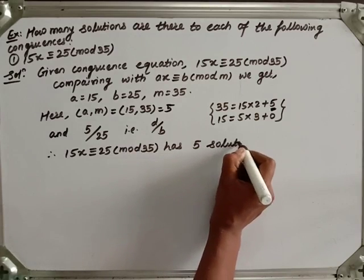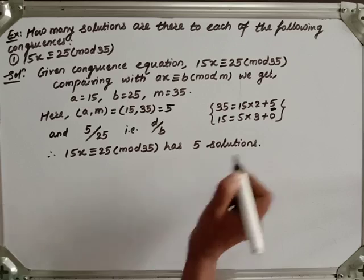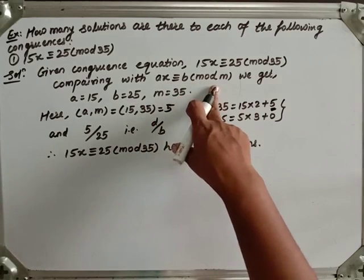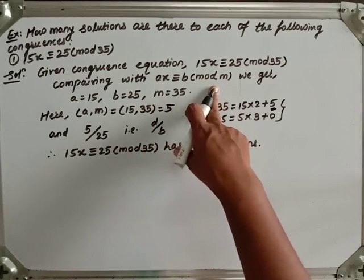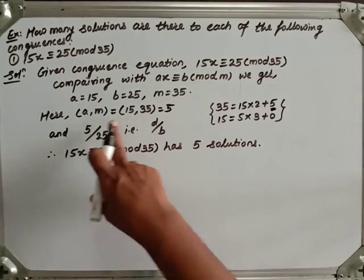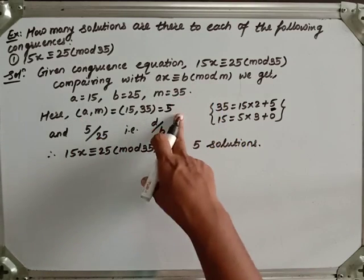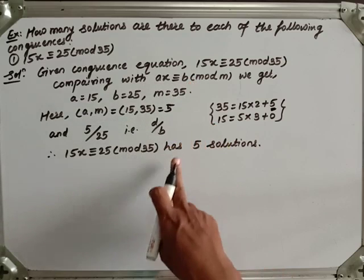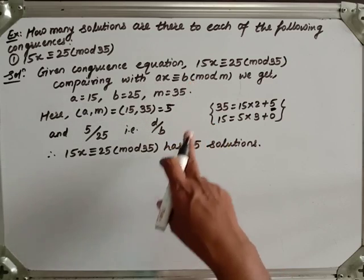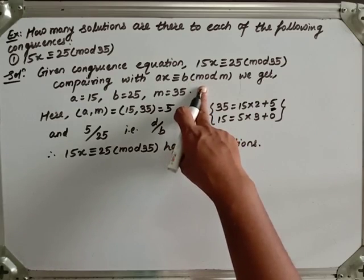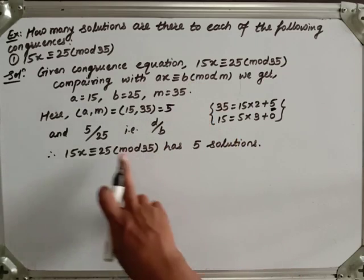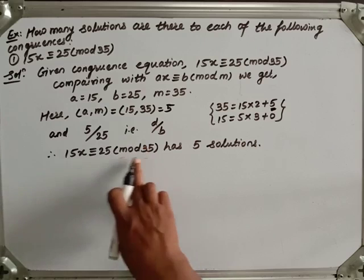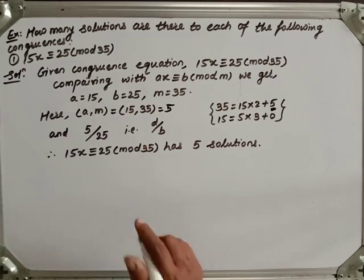In the previous video we saw the theorem: for a linear congruence ax ≡ b (mod m), if the GCD between a and m is d, and d divides b, then there are d solutions to that linear congruence equation. Same thing is here — this 5 divides 25, that is why this congruence equation has 5 solutions.